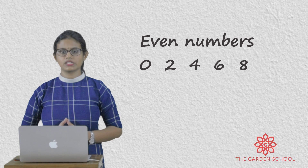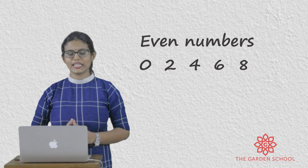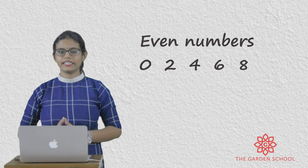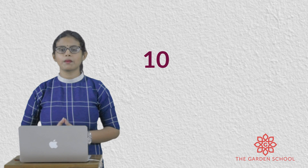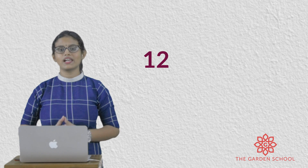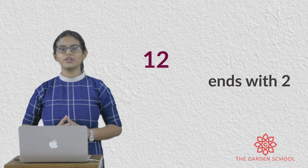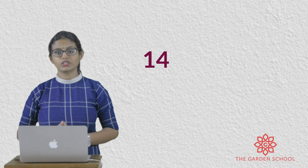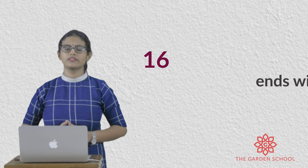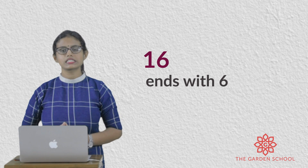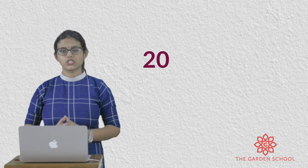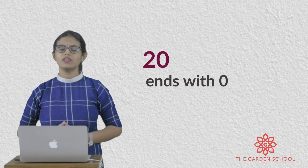Which are even numbers? Numbers that end with 0, 2, 4, 6, 8. Let's take number 10 — it ends with 0. 12 ends with 2. 14 ends with 4. 16 ends with 6. 18 ends with 8. 20 ends with 0.